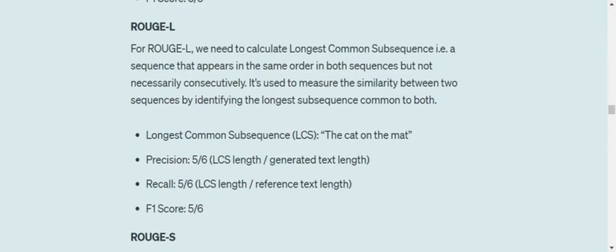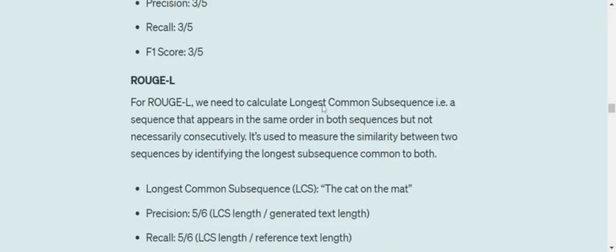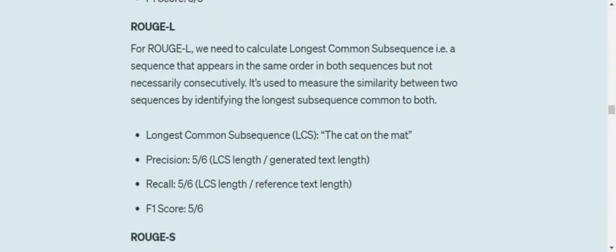ROUGE-L has a key difference — it calculates the longest common subsequence (LCS). LCS is a well-known problem in computer science that finds the sequence appearing in the same order but not necessarily consecutively. In our example, removing the third word from both sentences gives 'the cat on the mat' in the same order — that is the LCS. The LCS length is five. Precision is LCS length over generated text length, recall is LCS length over reference text length, and F1 is calculated similarly.